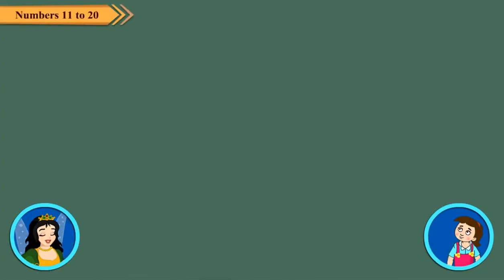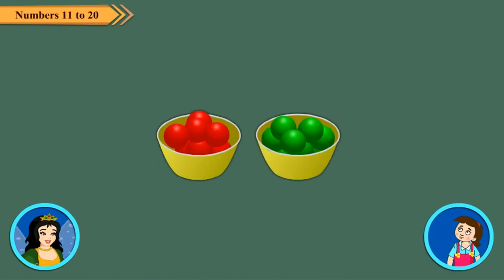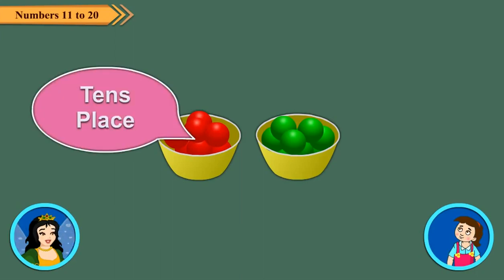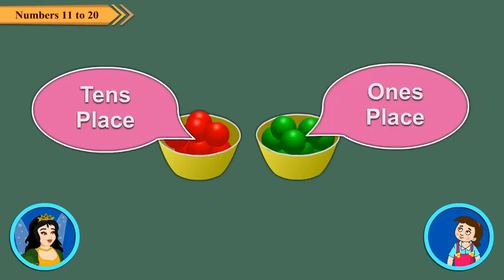We have two bowls with us. One with red beads and another with green beads. What are we going to do with them? These red beads stand for tens place and green beads stand for ones place.